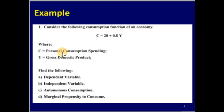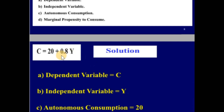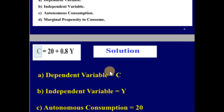Consider the following consumption equation: C = 20 + 0.8Y, where C is personal consumption spending and Y is gross domestic product. Find the dependent variable, independent variable, autonomous consumption, and marginal propensity to consume. The dependent variable is located before the equal sign in the consumption equation; therefore, the dependent variable is C, which is affected by the change in Y.